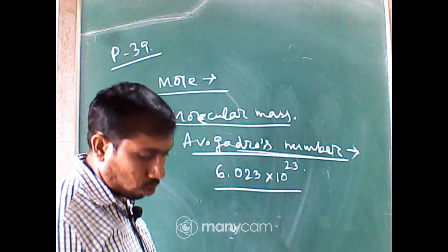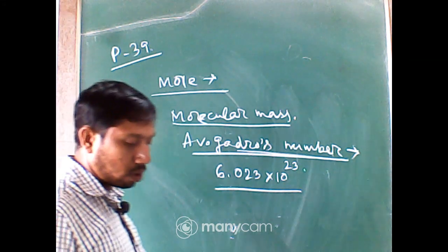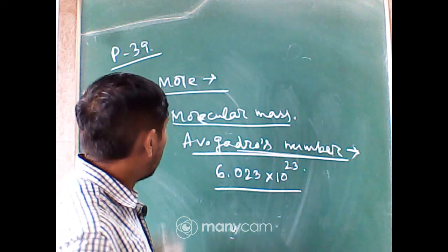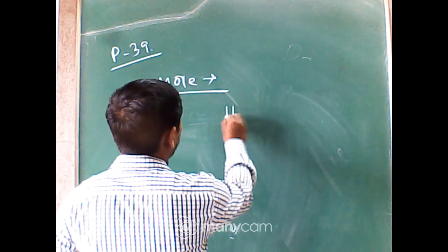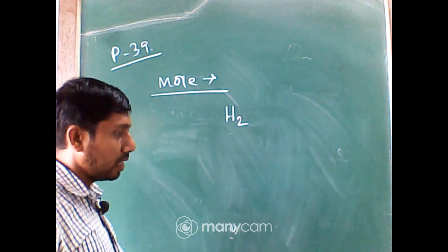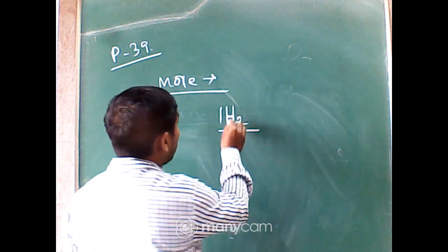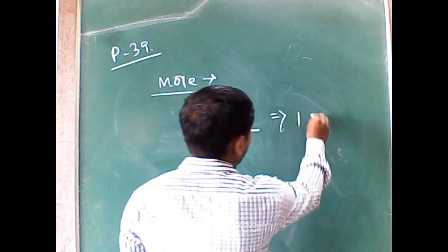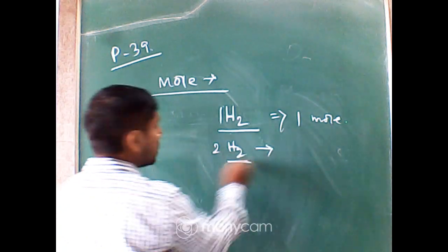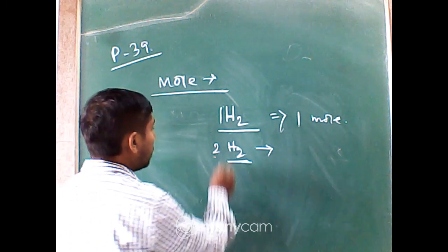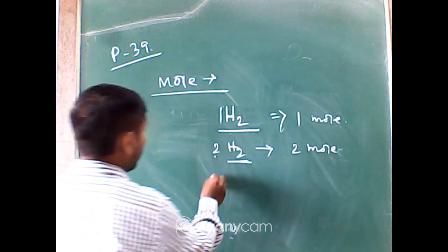Consider the reaction 2H₂ + O₂ → 2H₂O. When we write H₂ with no coefficient, the numeric value is 1, so it represents 1 mole of H₂ molecules. When 2H₂ is written, the numeric value before the molecule is 2, so it is 2 moles.